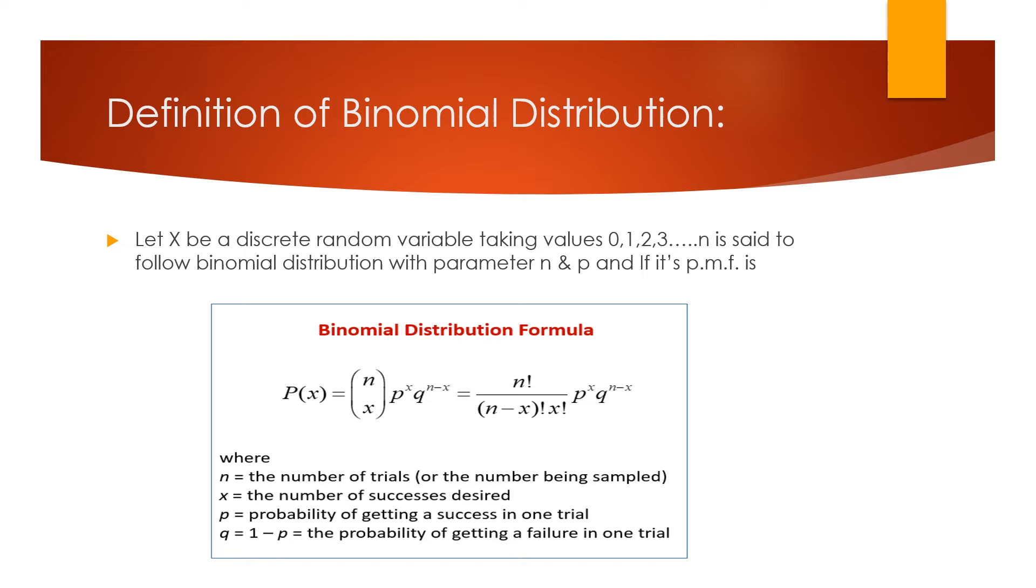And x is the number of successes desired, p is the probability of getting a success in one trial, and q equals 1 minus p is the probability of getting a failure in one trial.